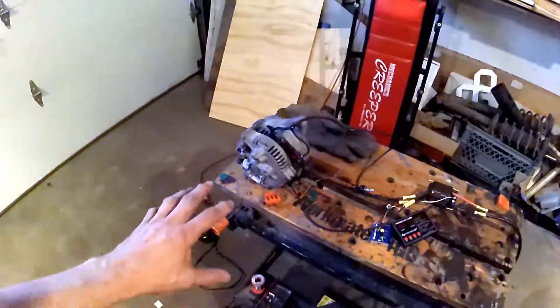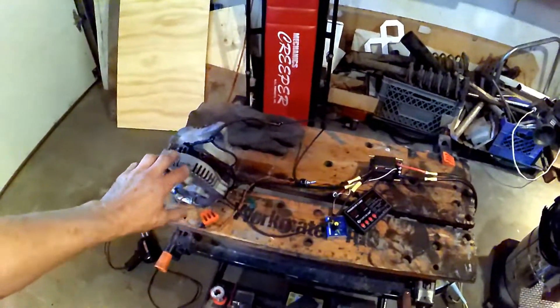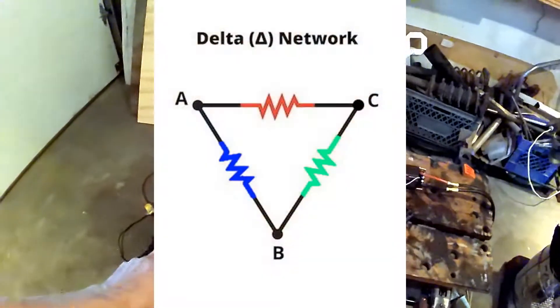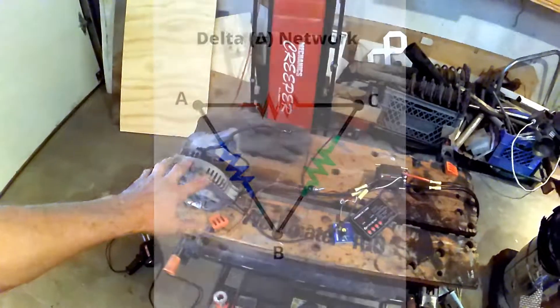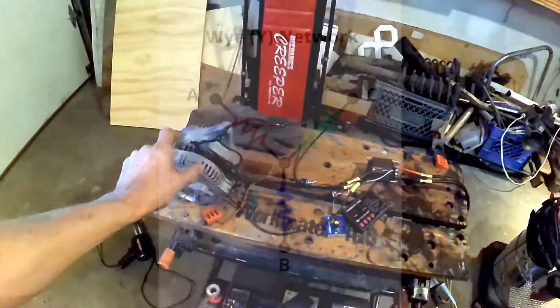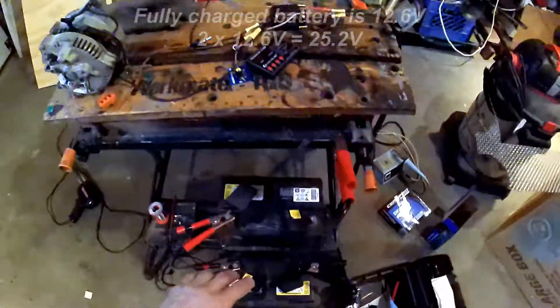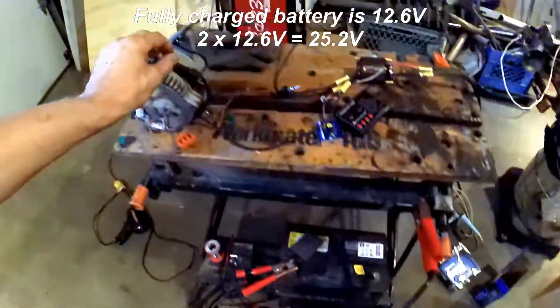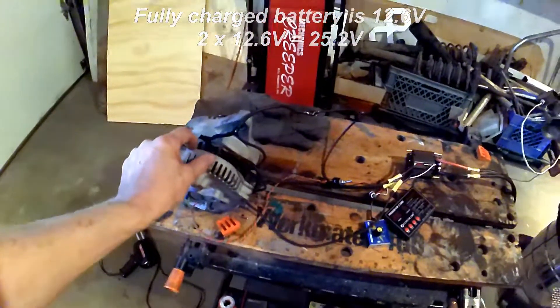Since the last video, I've wired this up in a delta configuration. Previously it was in a Y configuration, which worked quite well. Now with the delta, we get the full voltage of our batteries—we've got 25 volts hooked up across each of the coils.